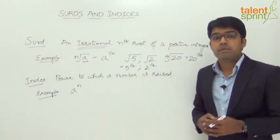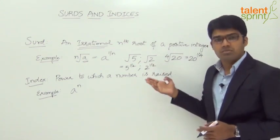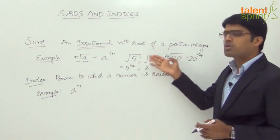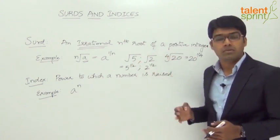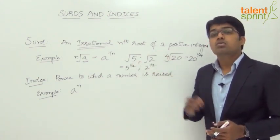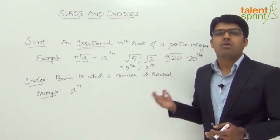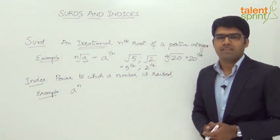Clearly remember: every surd is a root, since we have a root symbol — square root, cube root, or any nth root. But all roots are not surds; all surds are roots but all roots are not surds.